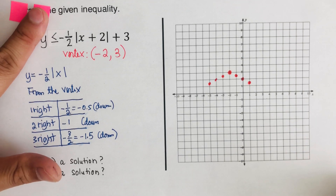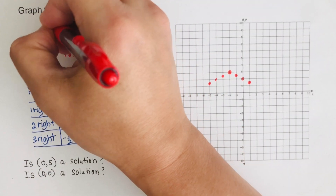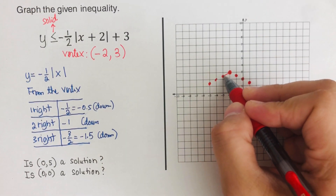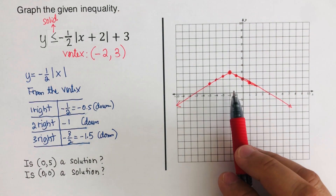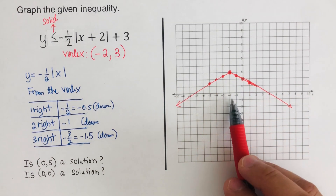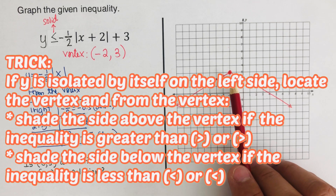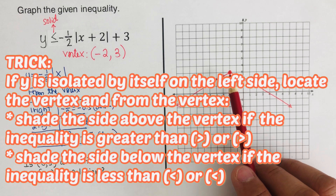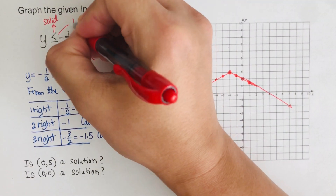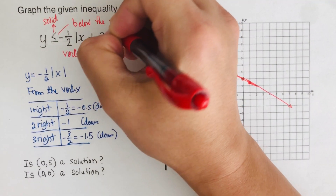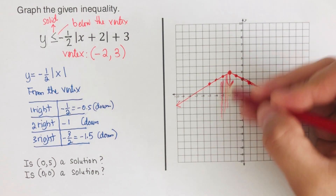We determine whether to use a solid or broken line. Since there is a bar underneath the inequality symbol, we use a solid line. Now we determine which side to shade. The trick: if y is isolated on the left side, locate the vertex and shade above the vertex for greater than or greater than or equal to, and below the vertex for less than or less than or equal to. Since this inequality is less than, we shade below the vertex — down from the vertex, shading all of that region.